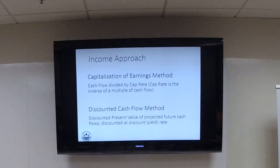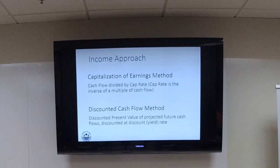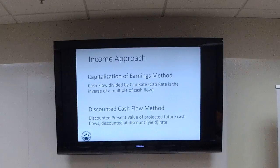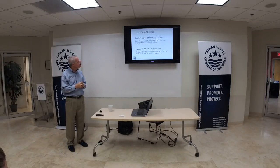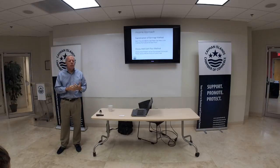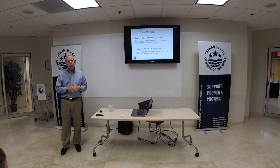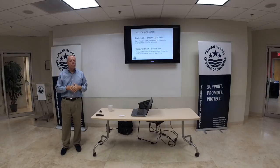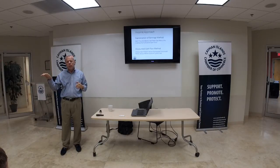As long as we're profitable, we can do an income approach and come up with a value that makes sense. There are two primary methods: one is called the capitalization of earnings method, sometimes called the direct capitalization method, and the other is the discounted cash flow method. The capitalization of earnings method takes one shot — you say, what is the cash flow going to be for one year on a stabilized, normal basis? You divide by a capitalization rate and get a value. It basically assumes that income will continue into perpetuity, with growth factored into the cap rate.